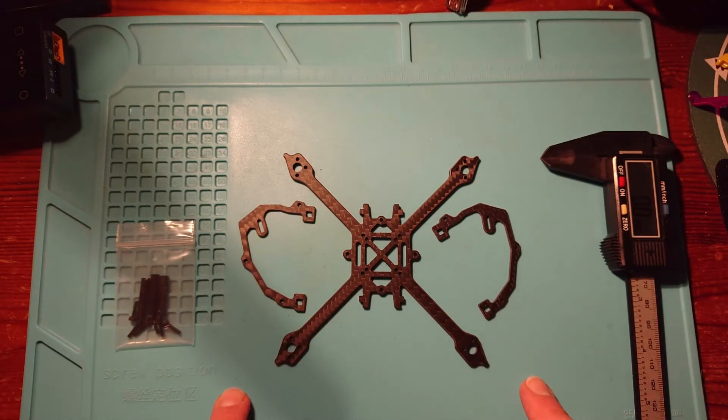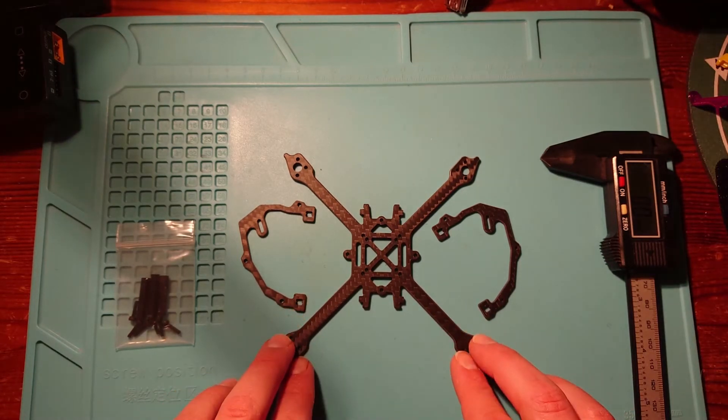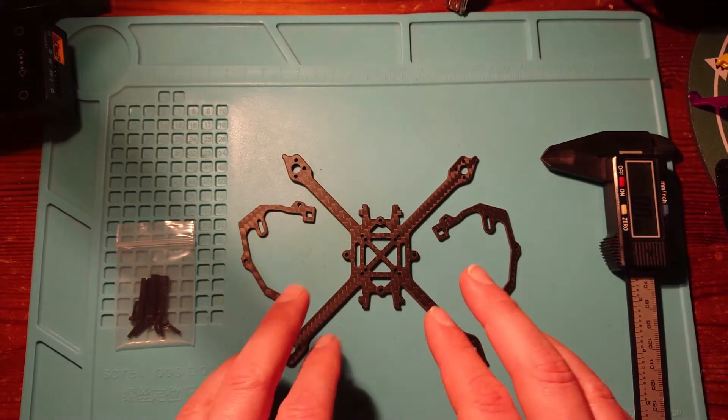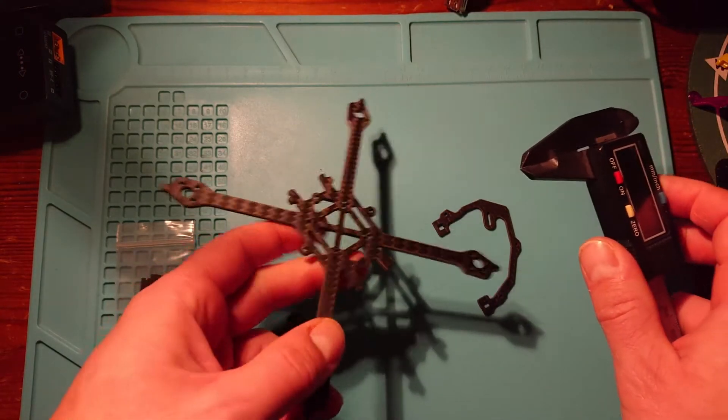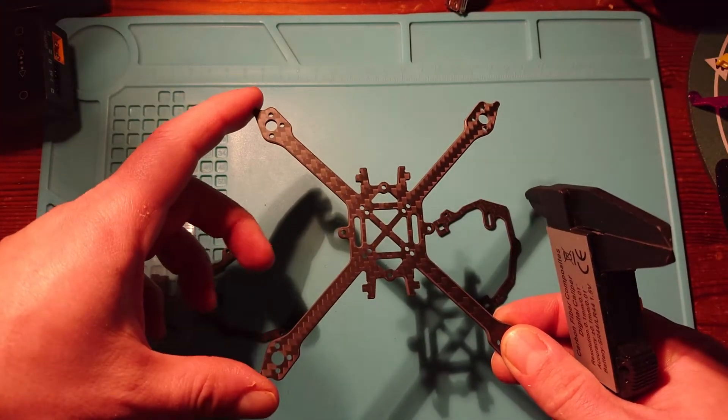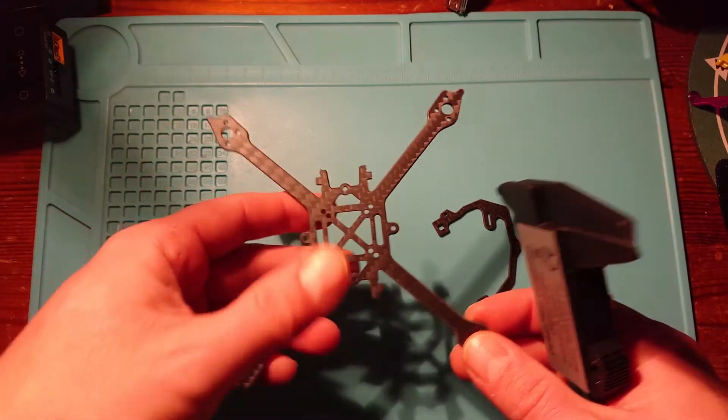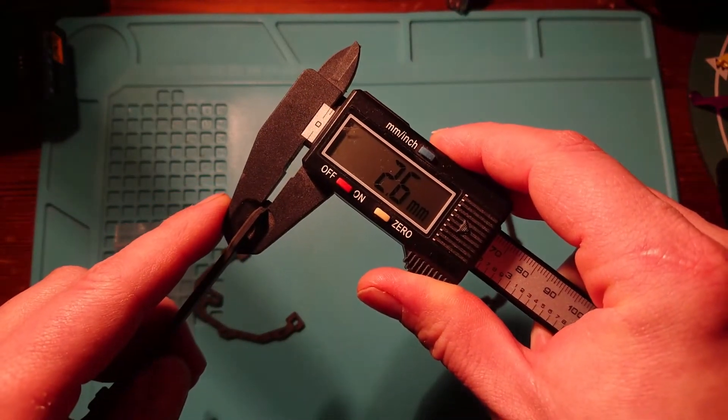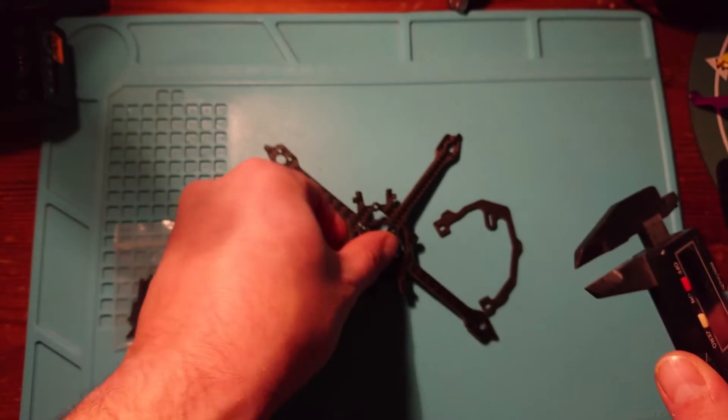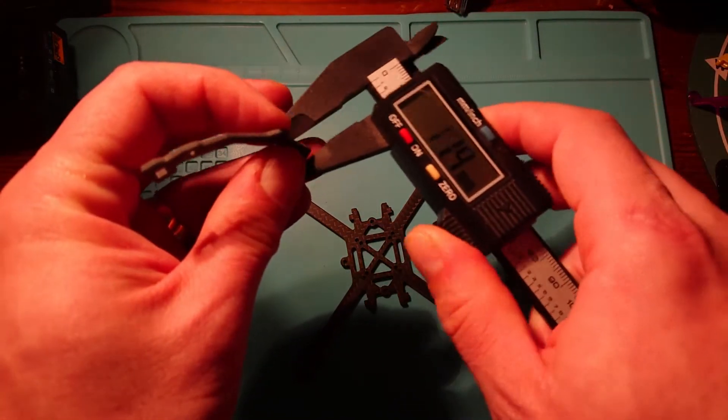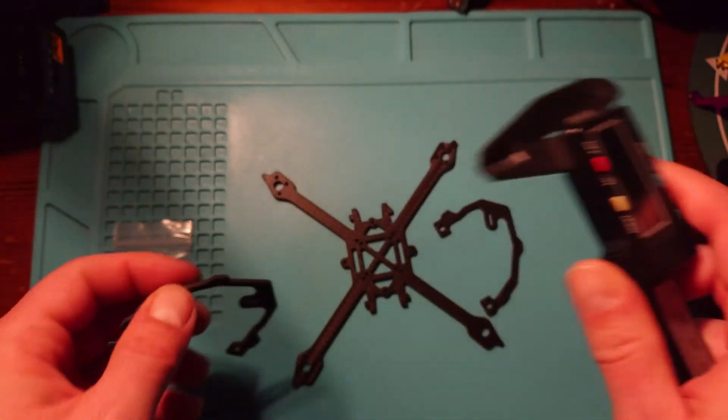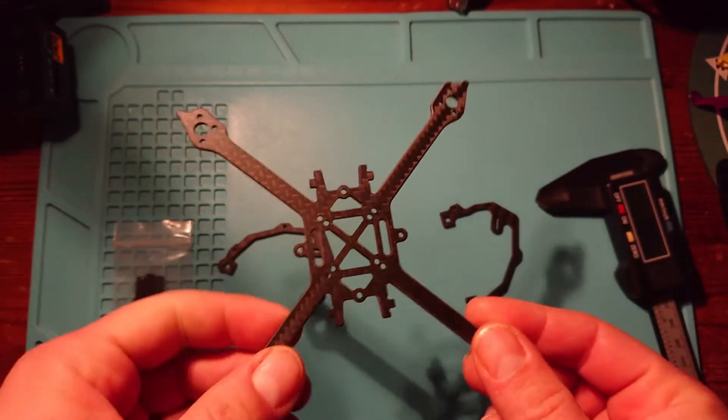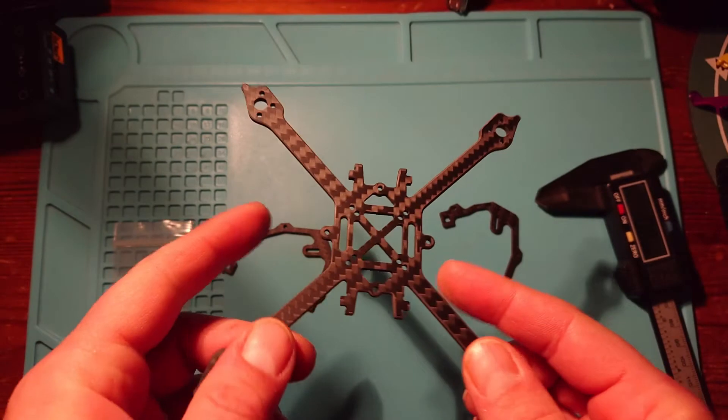Let's take some measurements. It's a true X frame, so it's exactly equal distance from front to back as it is side to side. The thickness of the carbon is coming in around about two and a half millimeters, which is quite nice. The side plates are coming in about two millimeters. It seems to be very good quality carbon, with a little bit of flex to it, but you need that with these small quads.